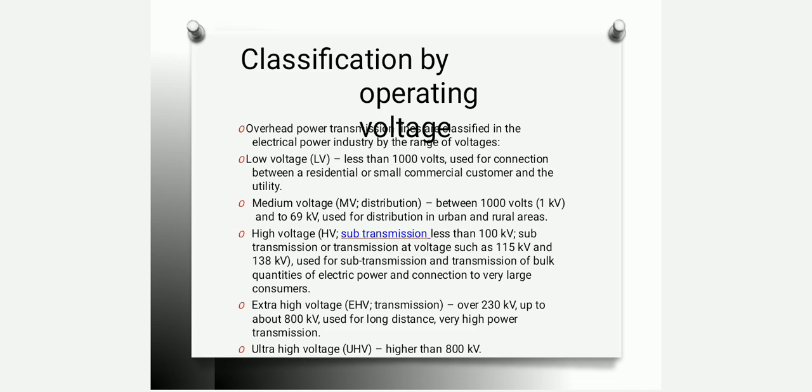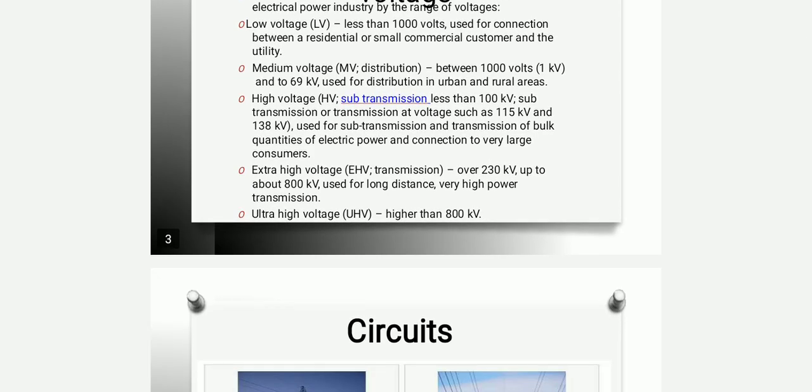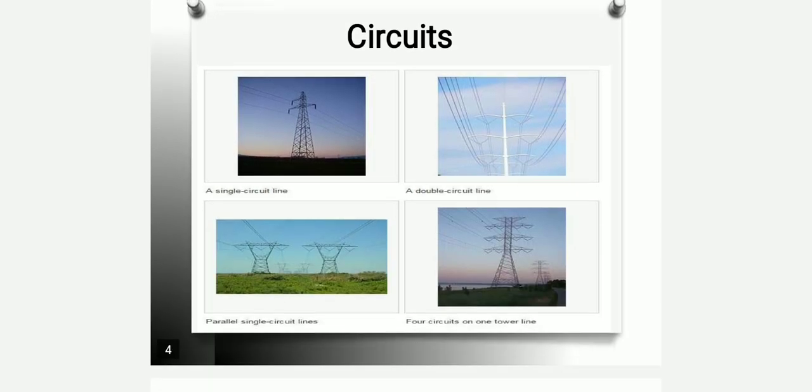So if it is up to 1,000 volts it is called low voltage; between 1,000 volts and 69 kV it is medium voltage; greater than that and less than 100 kV it is high voltage. Similarly we have extra high voltage and ultra high voltage. These represent different types of lines: single circuit, double circuit, parallel lines, and four circuits on a single tower, depending upon the construction and design of the tower.